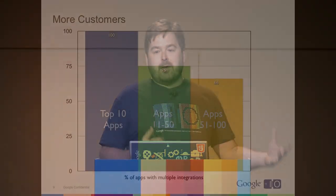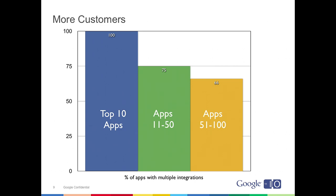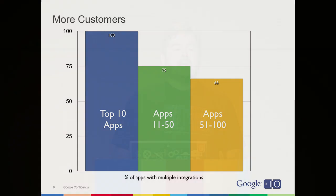Of course, there are a lot of variables that go into how well an application performs: the pricing model, the category of the app, how well they do marketing and support. All of these are things that we would have to control for in order to find a strong correlation, or a strong causation even. I'm still really interested in getting to the heart of that question, but fortunately other people have been looking at this question and came to the very same conclusion.